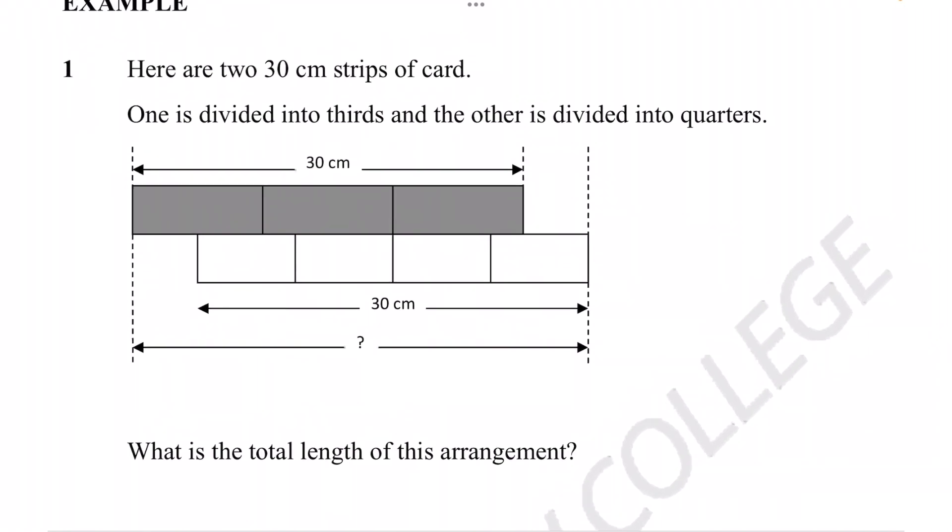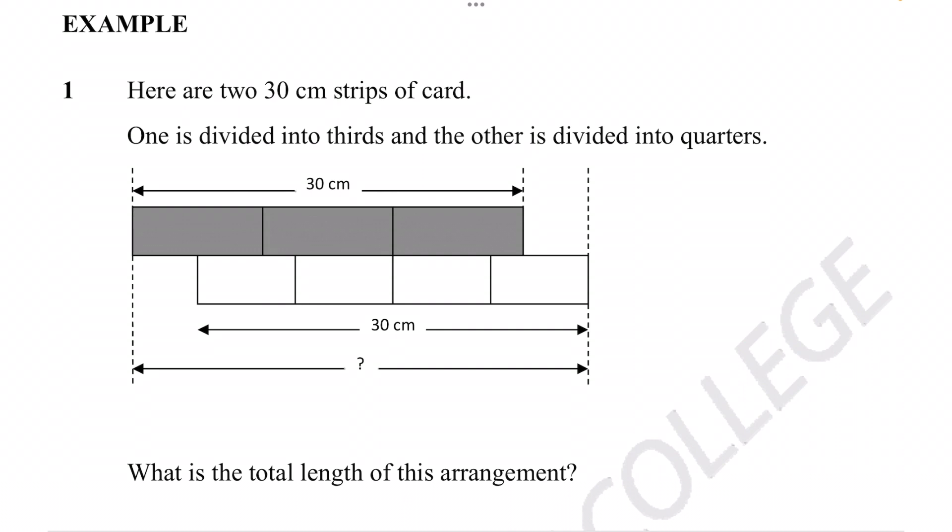So those would be the more common concepts we're going to lean towards when we're dealing with length questions. Let's see if we can try it out by dealing with this question here. This example question says we're given two 30 centimeter strips of card. One is divided into thirds and the other is divided into quarters. Given that knowledge, what is the total length of this arrangement?